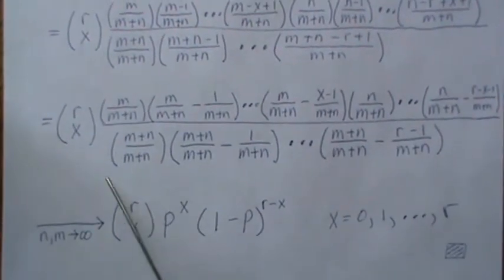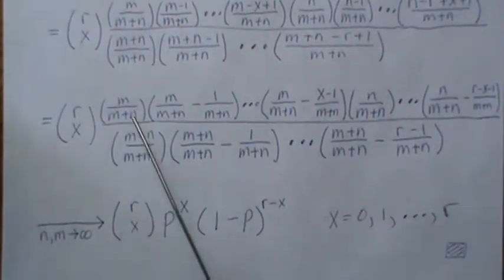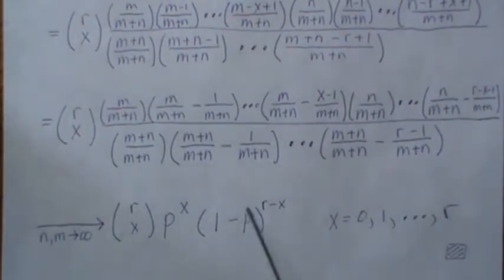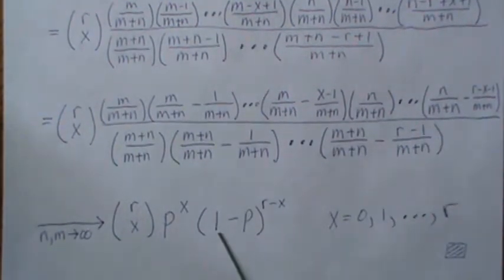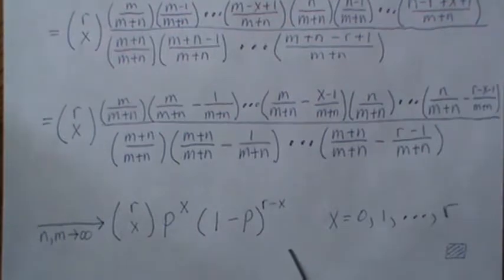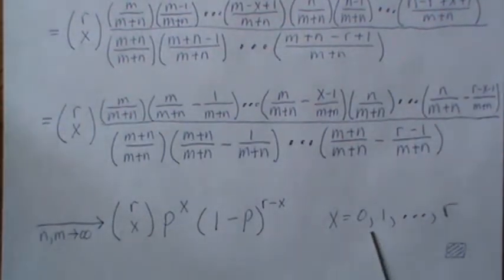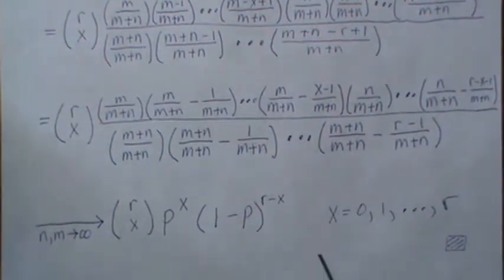And then we're left with r choose x. And there's x p's up here. And then there's r minus x, 1 minus p. And that's what we wanted to show, when x goes from 0 to r. And so we're finished.